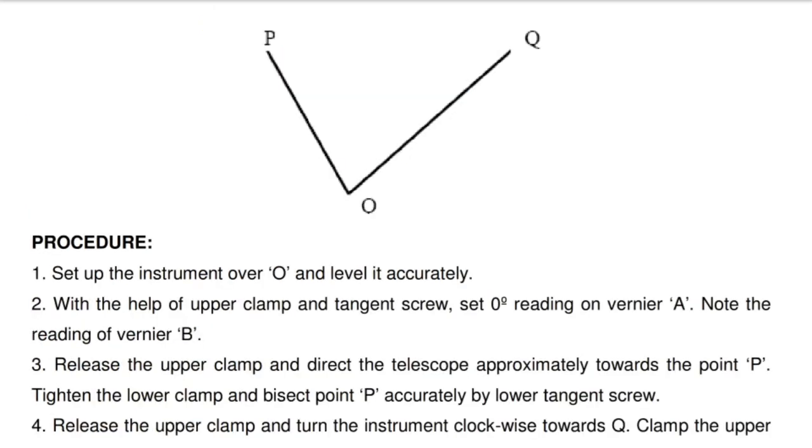Procedure: Step 1 - Set up the instrument over O and level it accurately. Step 2 - With the help of the upper clamp and tangent screw, set zero degree reading on vernier A. Note the reading of vernier B.